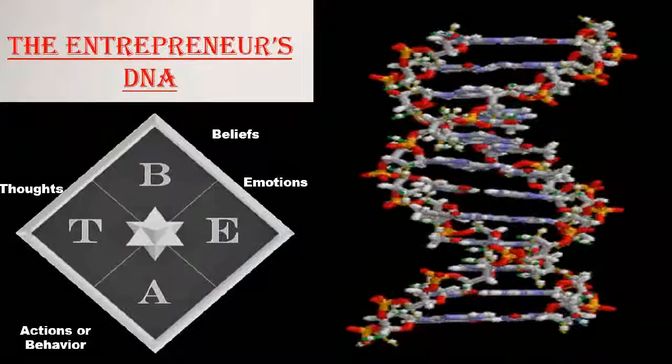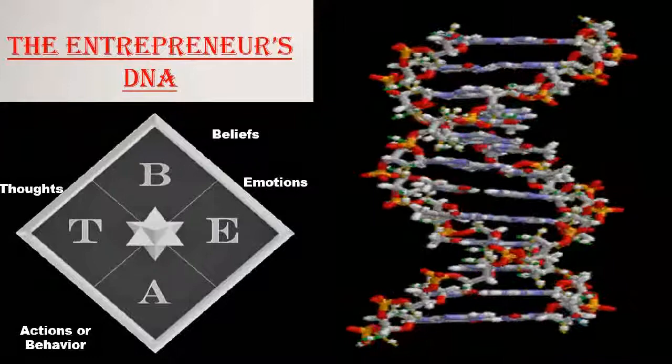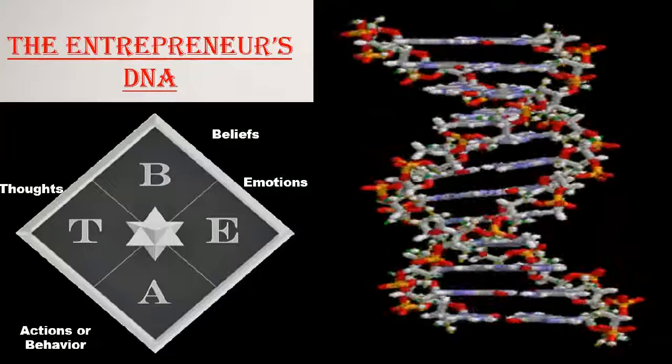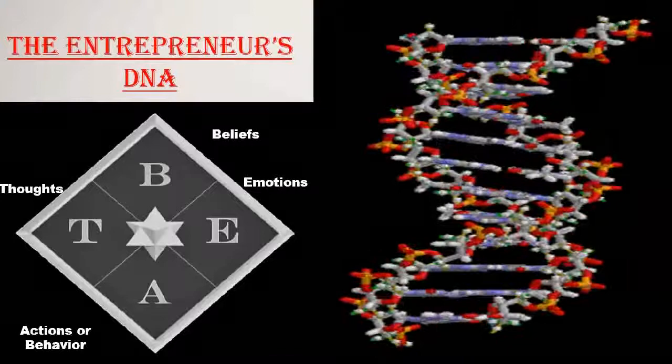The first one is BACT. Everybody say BACT. B is your beliefs. How does your belief affect your emotion? A is your actions or behavior. And C is your thoughts. That is your DNA.